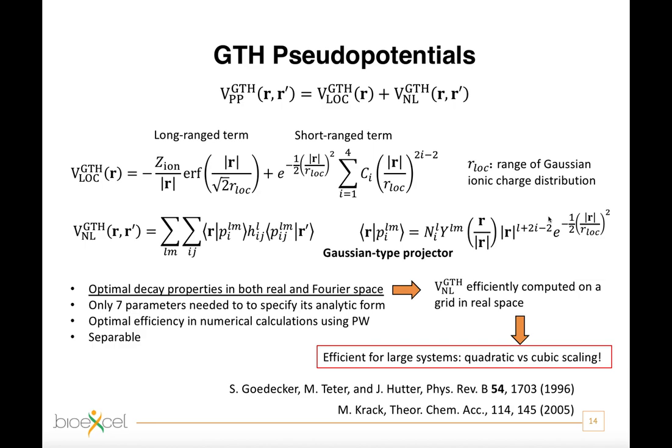Since the scaling of this operation in the real space is quadratic with respect to the size of the system, while in the Fourier space is cubic. Therefore, the GTH pseudopotentials significantly contribute to the CP2K capability to scale very efficiently with respect to the size of the system, a feature for which CP2K stands out from many other quantum codes.